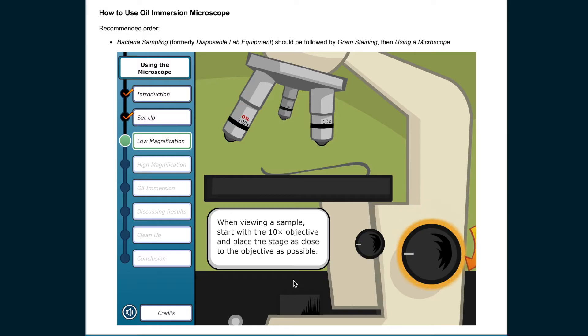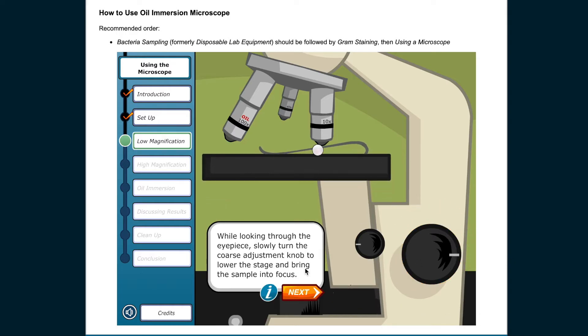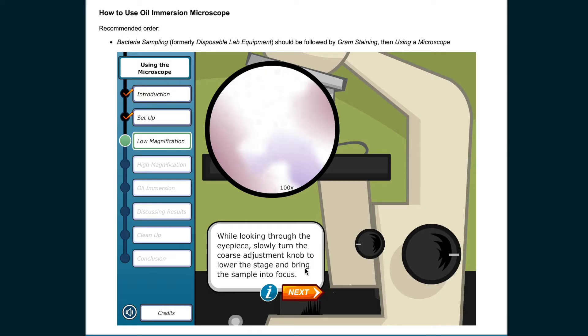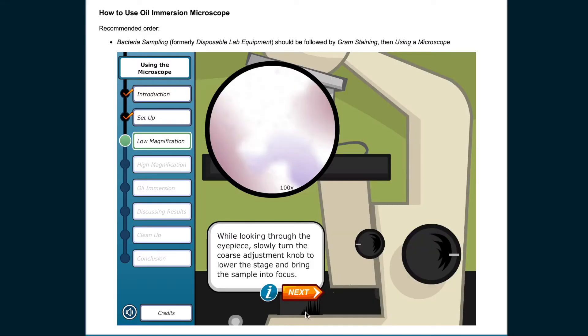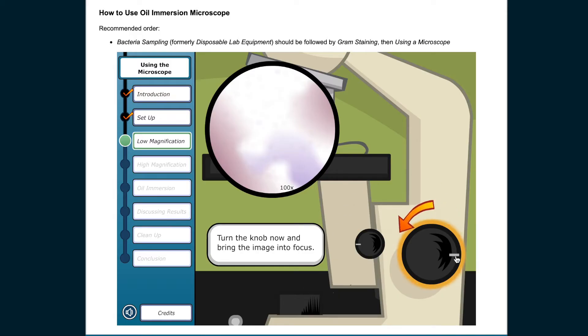When viewing a sample, start with the 10x objective and place the stage as close to the objective as possible. While looking through the eyepiece, slowly turn the coarse adjustment knob to lower the stage and bring the sample into focus. On some microscopes, the nose piece or objective moves when using the coarse and fine adjustment. Turn the knob now and bring the image into focus.